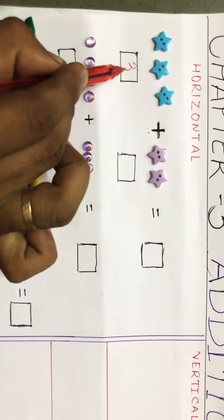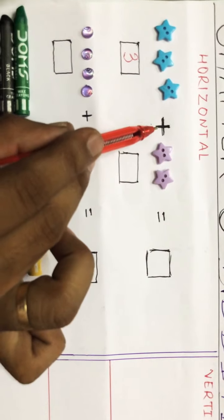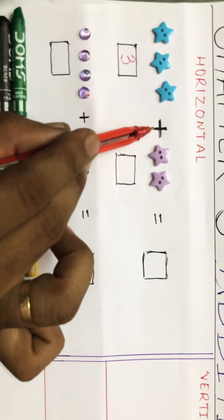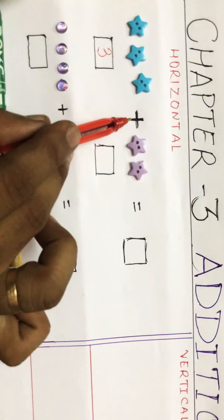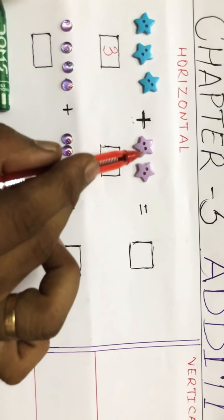So write here three, and count these stars also. There is a plus sign there, so you should understand that you have to do addition.